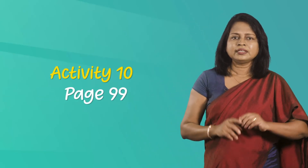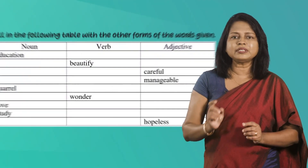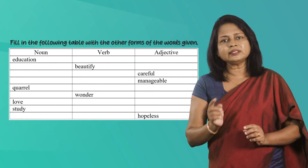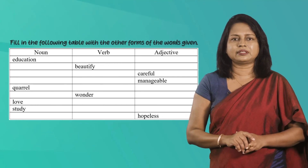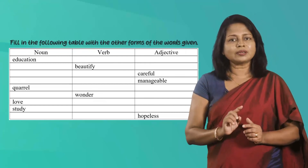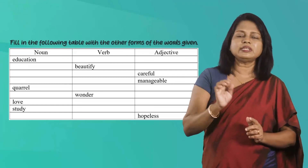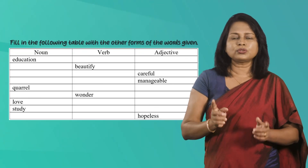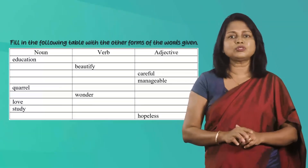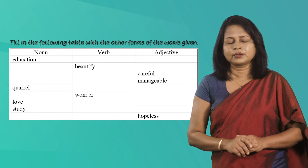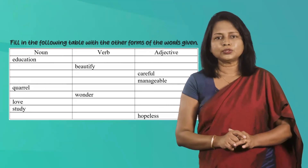Okay children, now let's do another activity. This is also from your textbook — it is activity 10 on page 99. Here you have to fill in a table with the other word forms. Refer to the three column headings — noun, verb, and adjective — and fill in the blanks. This time it's not only adjectives you have to form. Pause the video and do it.